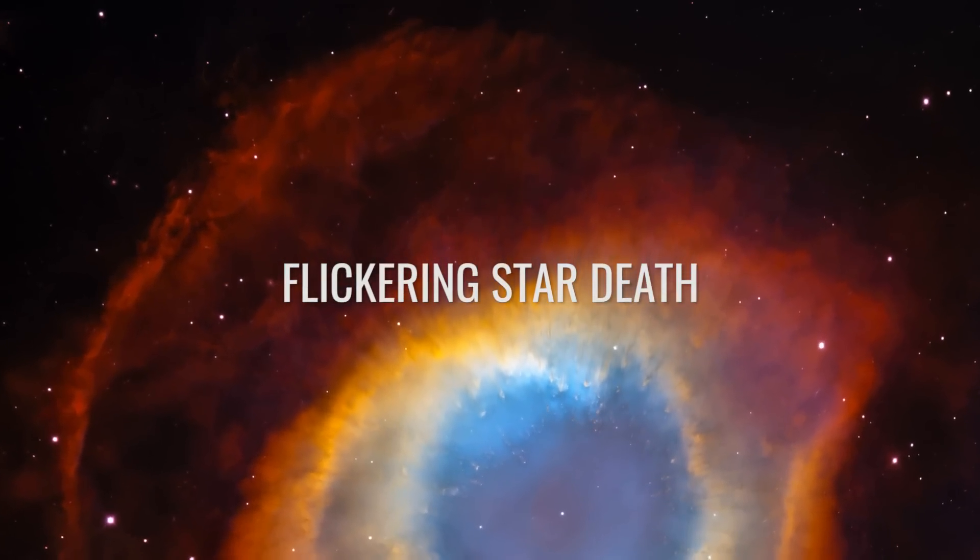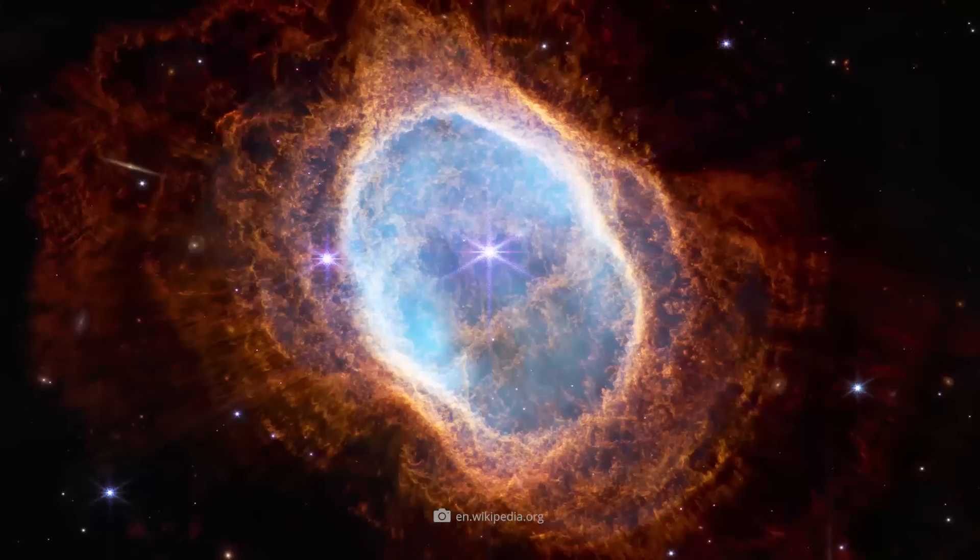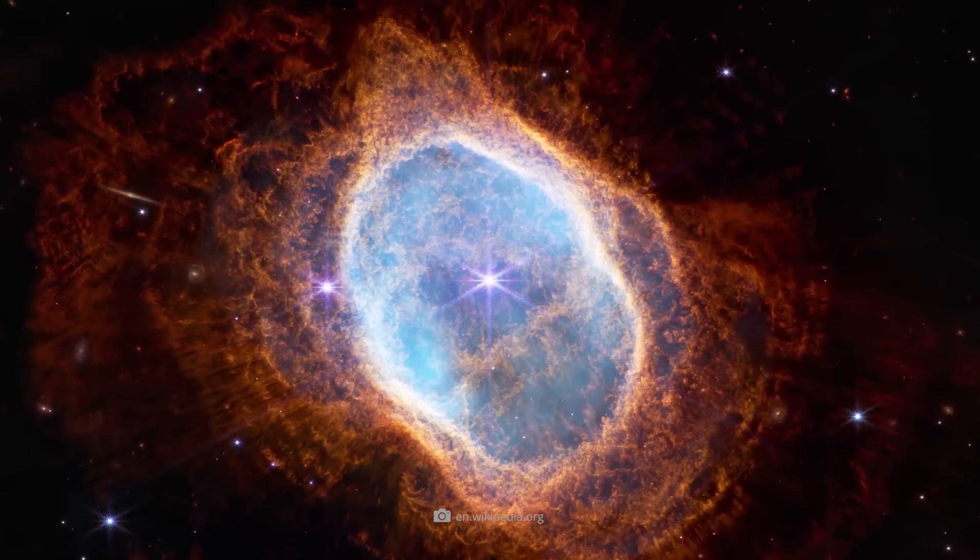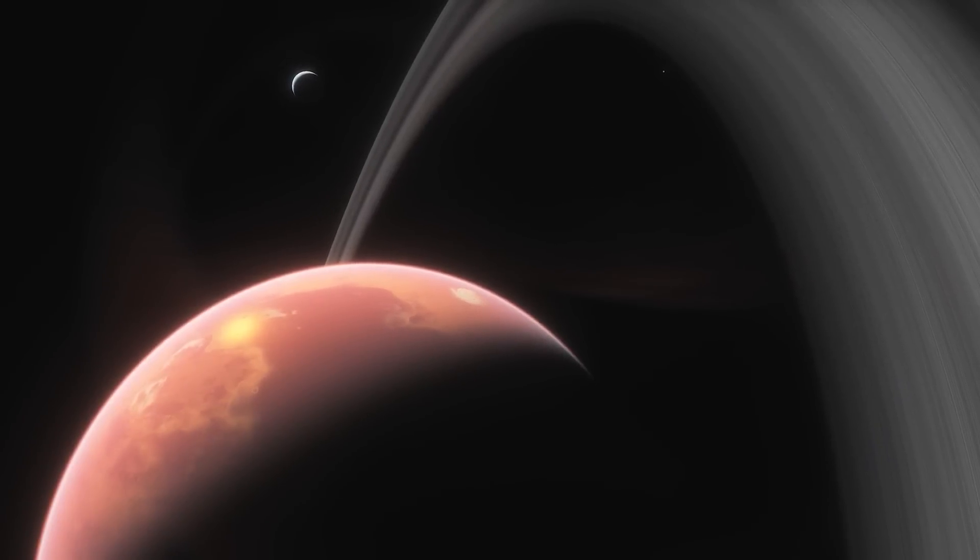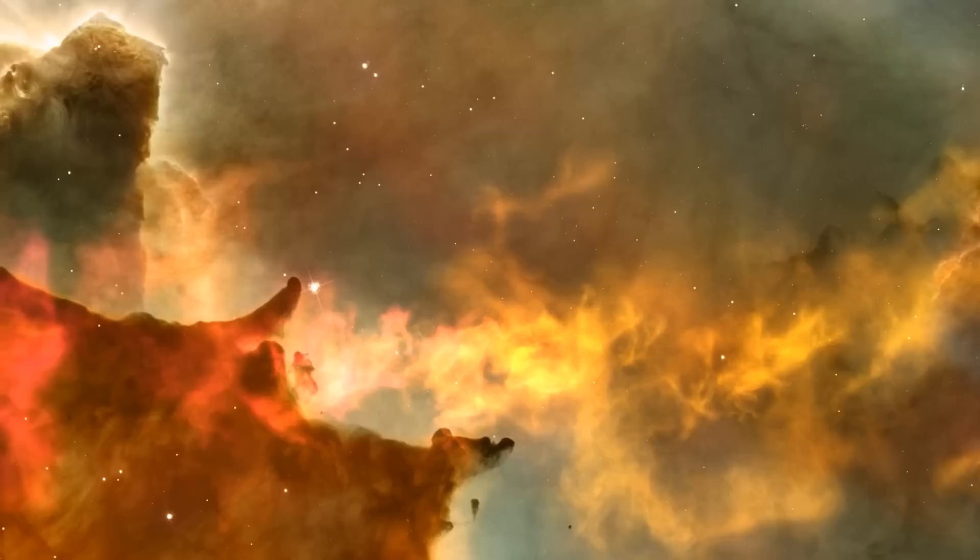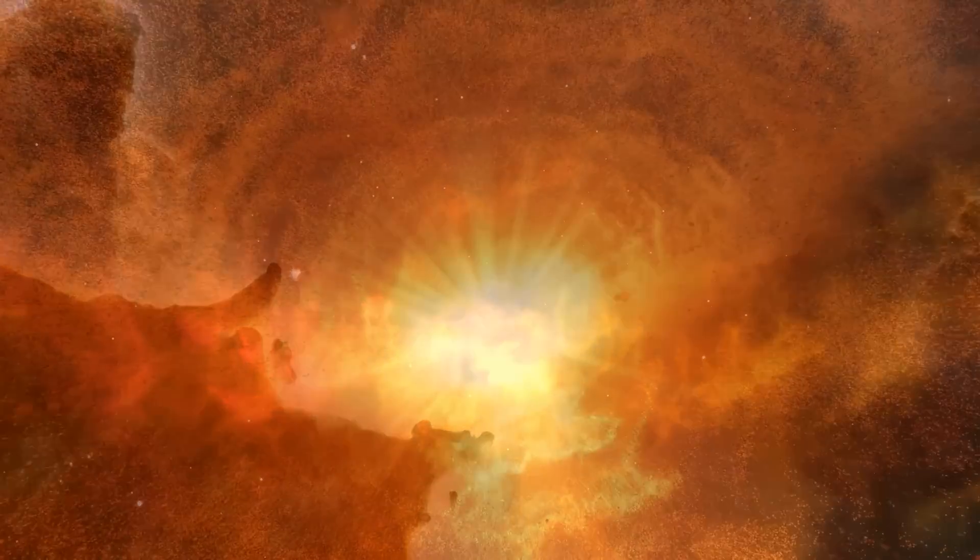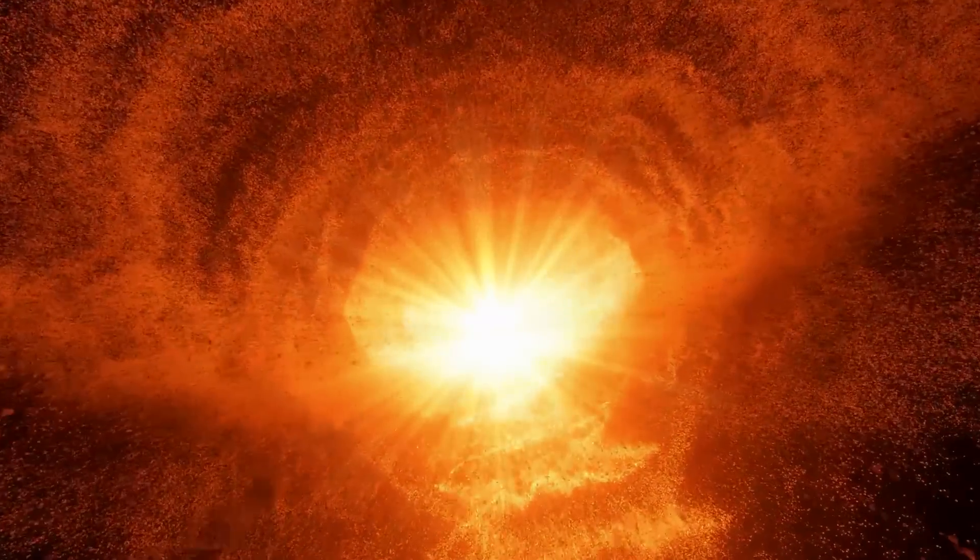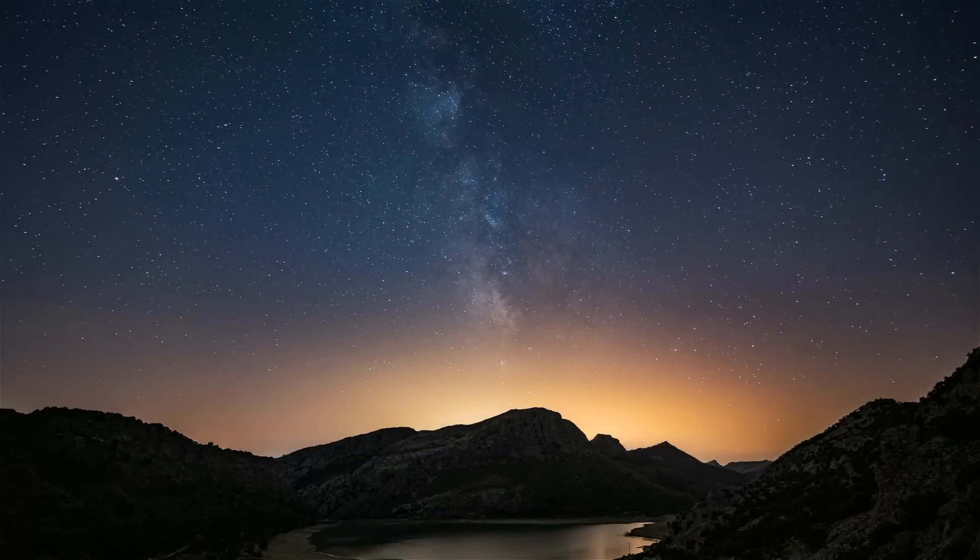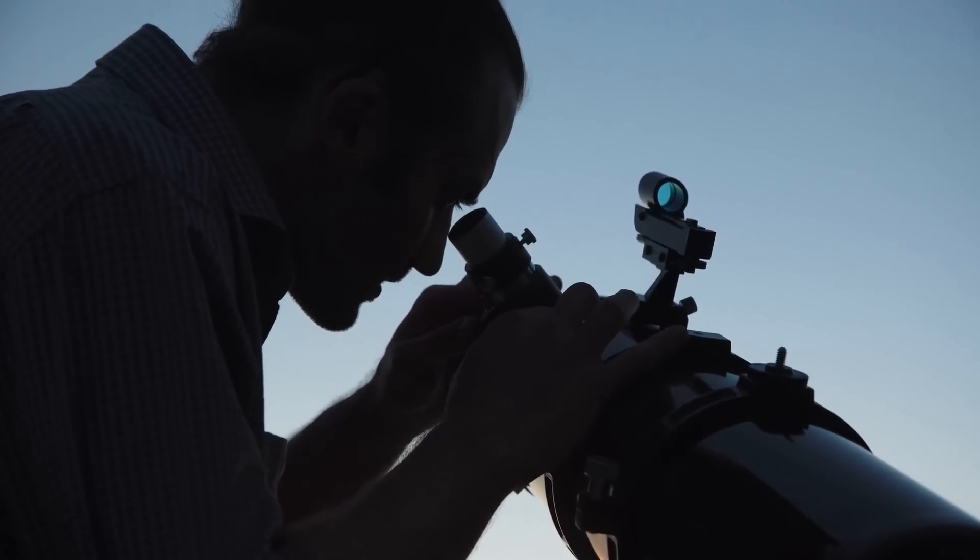Flickering star death. About 2,000 light-years from the sun, NGC 3132 is classified as a planetary nebula. Contrary to this official designation, however, such structures have nothing to do with planets. Rather, these nebular structures consist of gas and plasma ejected by an old star at the end of its evolution. The common but misleading name is due to the fact that planetary nebulae often appear spherical when viewed through a telescope.